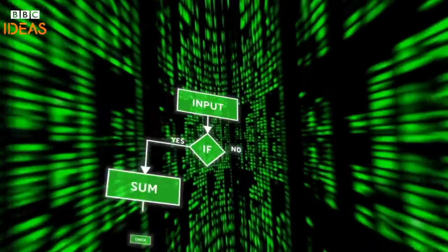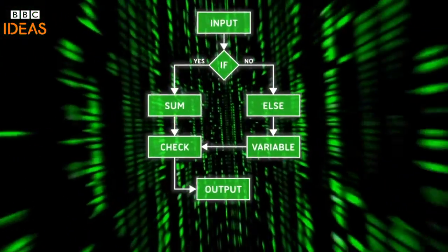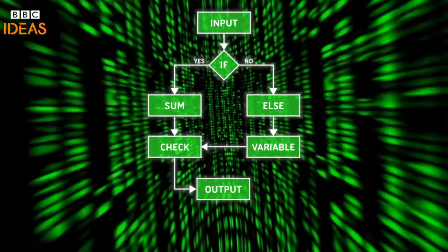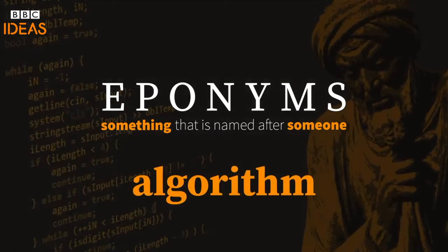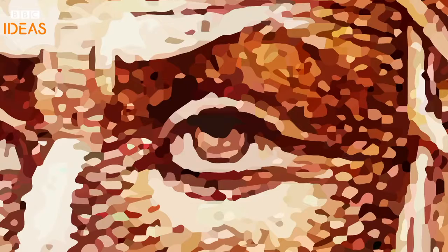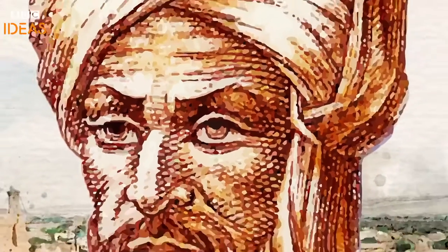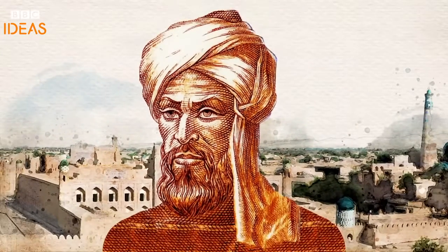We think of an algorithm as something new, but the term actually dates back about 900 years. The word algorithm comes from the name of a Persian mathematical genius, Muhammad ibn Musa al-Khawarizmi.